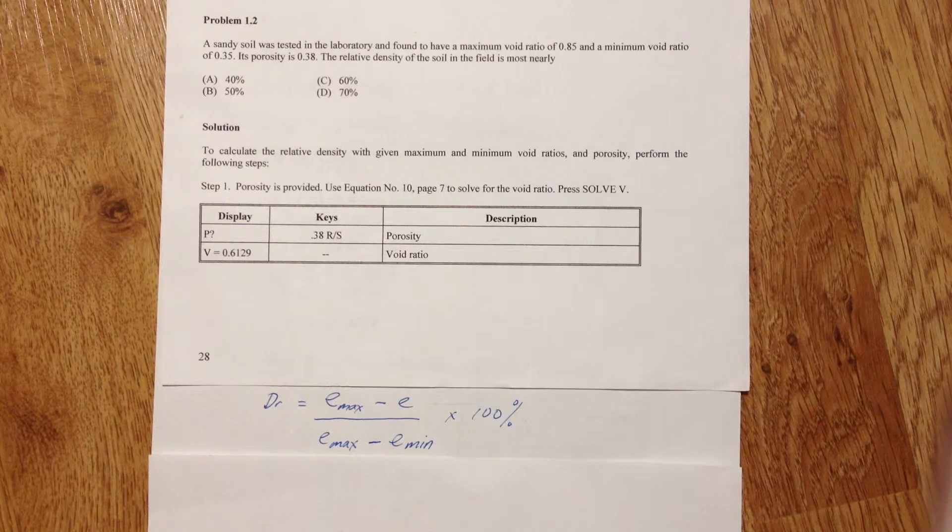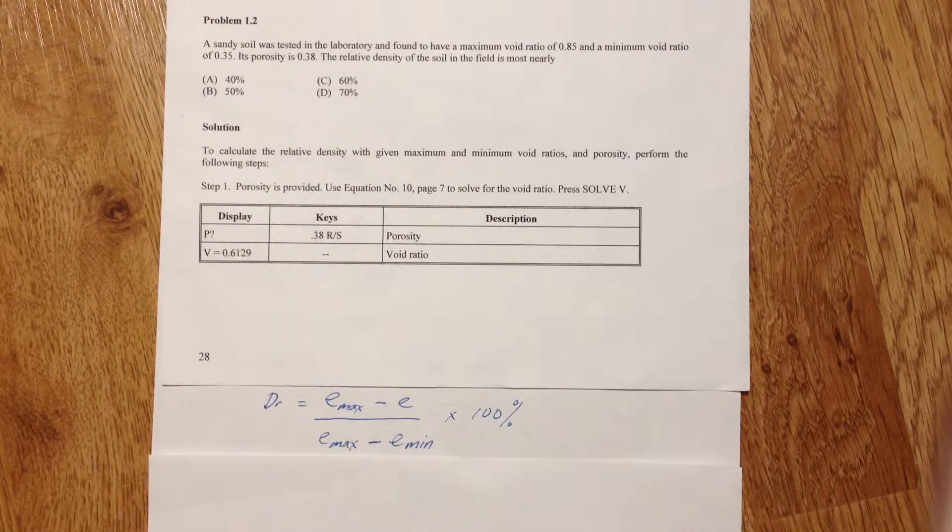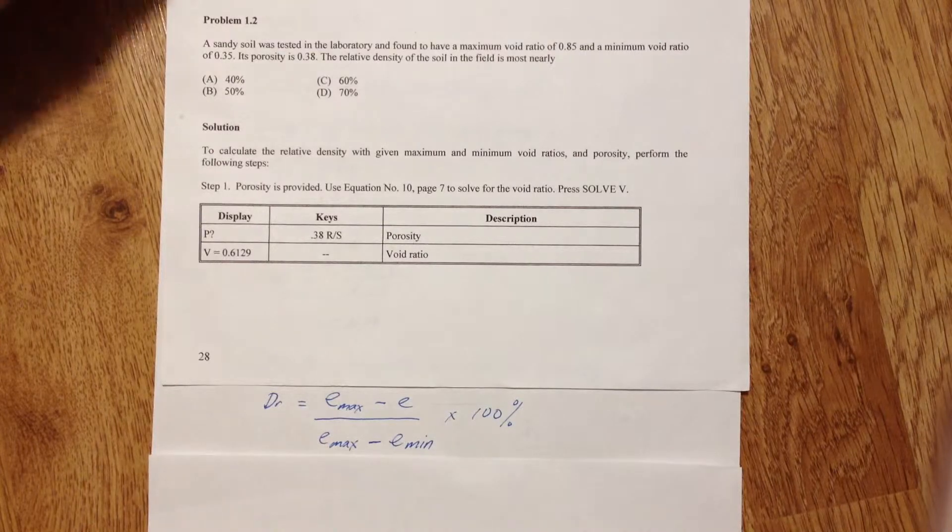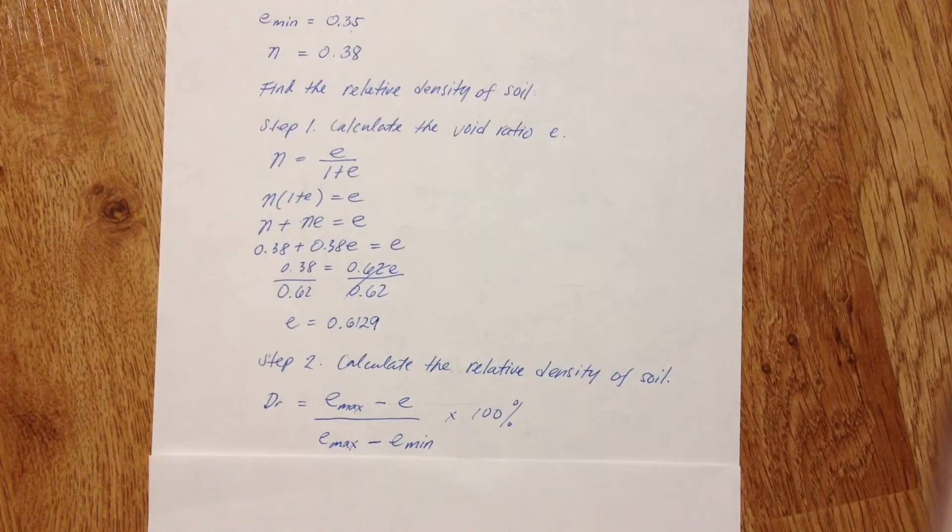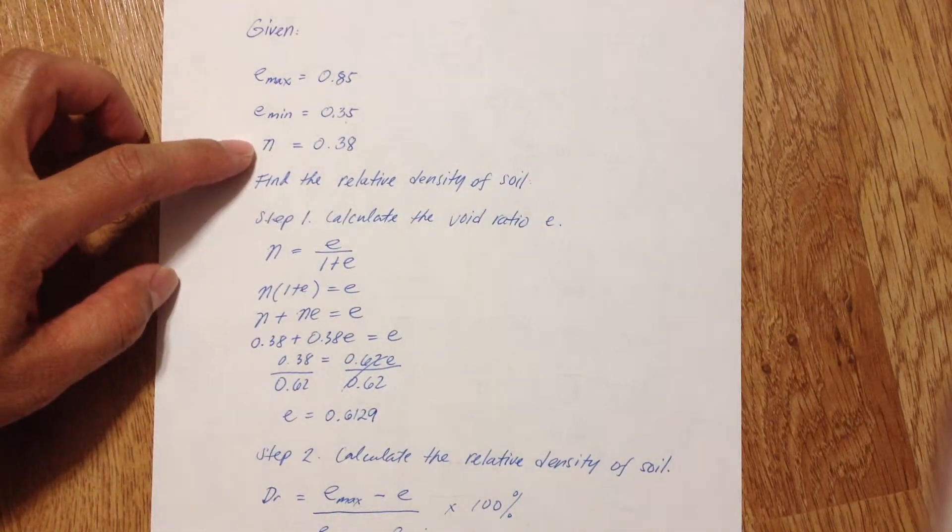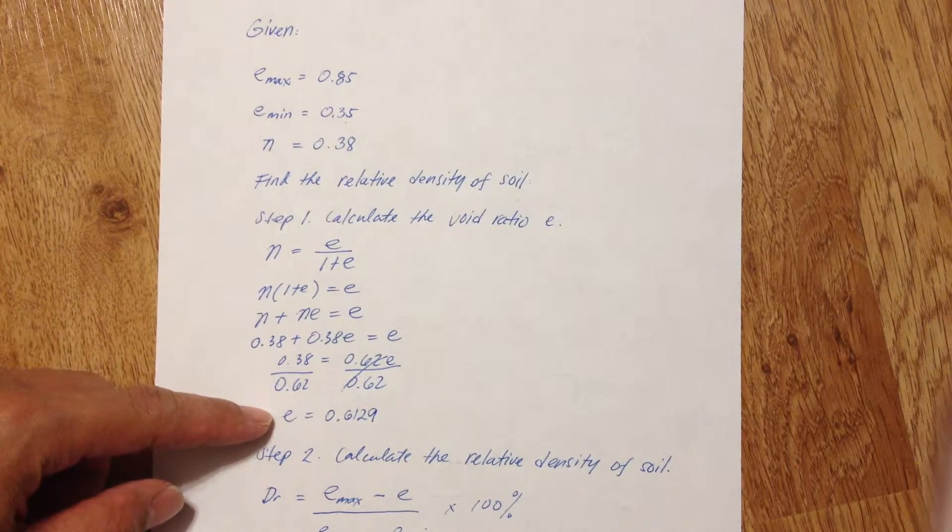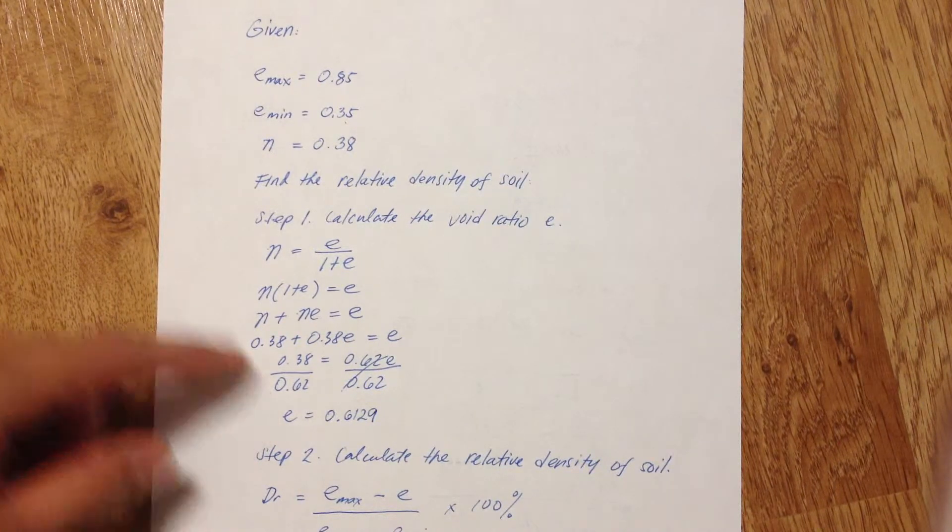E max and E min are given except for E which is not given, but porosity is given so we can use the given porosity to calculate the void ratio which is 0.6129.